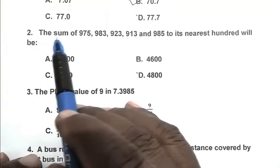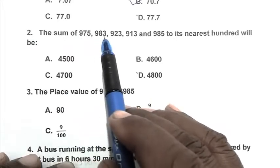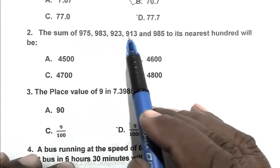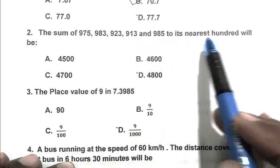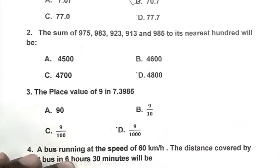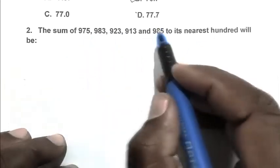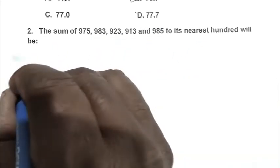Question number 2, the sum of 975, 983, 923, 913 and 985 to its nearest hundred will be. First we calculate the sum of these numbers.